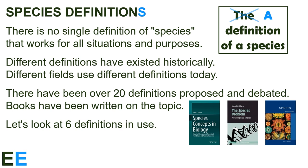Instead of getting too caught up in the intricate details of all these different possible definitions, let's look at six definitions in use. The six we look at will be the most common, and cover the range of different kinds of definitions people use. For each of these, we'll talk about what criterion the definition uses, and discuss the advantages and disadvantages of each one.